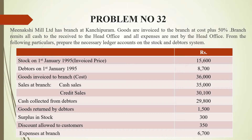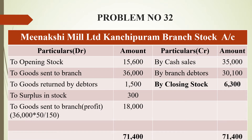In this problem, we deal with Stock and Data System and Invoice Price. We can calculate the invoice price as we did in the previous problem. The first account is Meenakshi Mill Limited branch stock account.